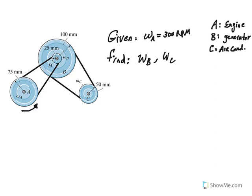You can see how pulley A is connected to pulley D. Pulley D is actually attached to pulley B, and they rotate with the same angular speed. So omega D and omega B are the same — if I find omega D, that is exactly omega B. That is based on the ratio of the pulleys.